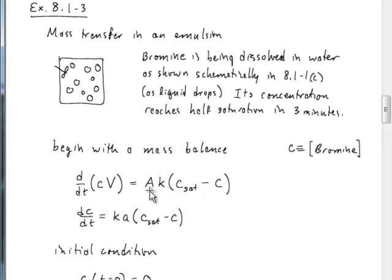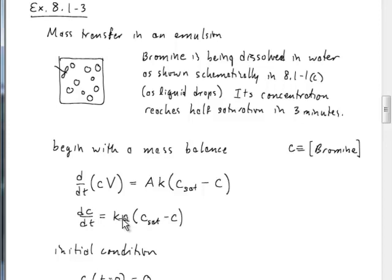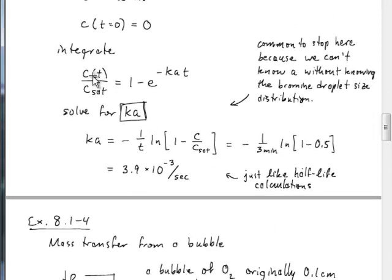That rate is the interfacial area multiplied by a mass transfer coefficient and the concentration difference: the saturated concentration of bromine around the edge of the droplets minus the concentration out in solution. The volume is constant, so dividing both sides by volume gives an area per unit volume of the emulsion — this parameter A. The initial condition says the concentration at time t = 0 is zero. The final solution after integration is that the fractional approach to equilibrium is 1 minus e^(−KAt).